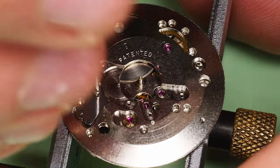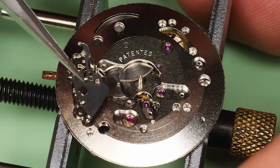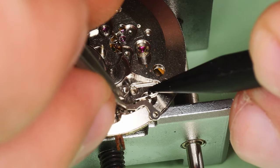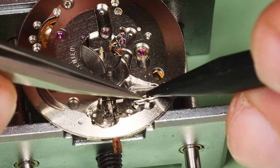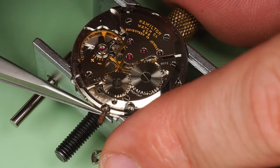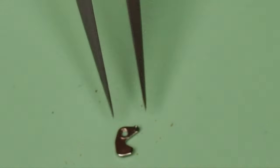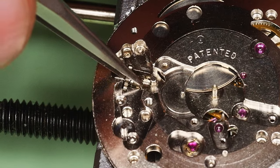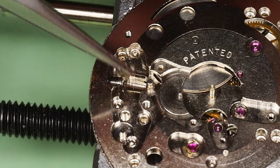The setting lever spring is removed by taking this screw out. Using a plastic pick to keep the components from disappearing, I can now remove the yoke and the yoke spring. Now I'll loosen the setting lever so I can take the female half of the split stem out. Come here, you. The winding pinion and clutch wheel complete the keyless works disassembly.